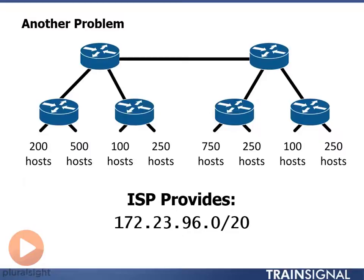Here are our host requirements. We need several networks with 200 to 250 hosts, a couple at 100 hosts, one with 750 hosts, and one with 500 hosts. Why would we need a 750-host network? Typically when using ARP, we don't want networks much beyond 500 hosts — 750 is pushing it. But with a lightweight wireless controller system, we can reduce broadcast traffic to a very minimal number, so wireless networks often support more than 500 hosts per network. Let's assume the 750-host network is a wireless network.